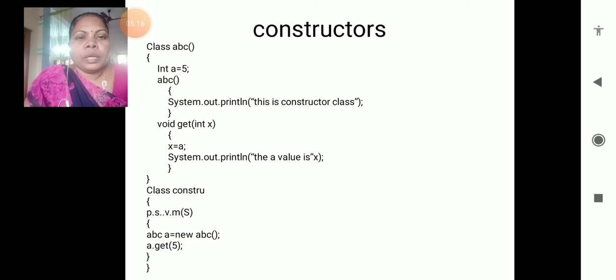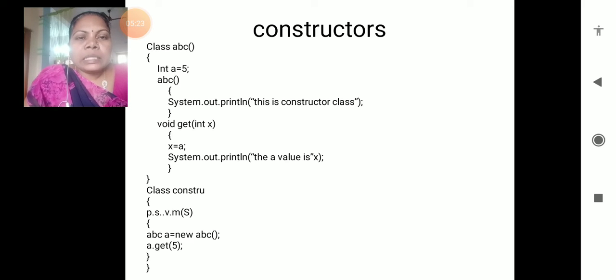The class name is ABC, and ABC is also the method name - class name and method name both are equal. That is why we are calling it a constructor.